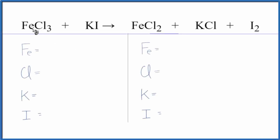In this video we'll balance the equation for FeCl3 plus KI. This is iron 3 chloride plus potassium iodide.